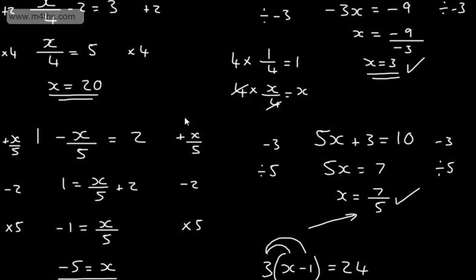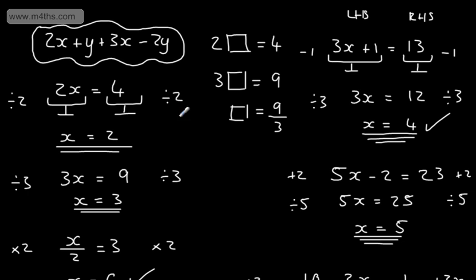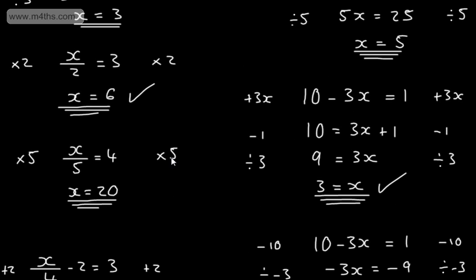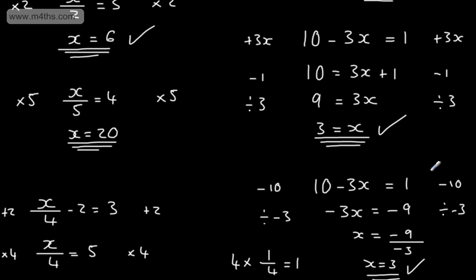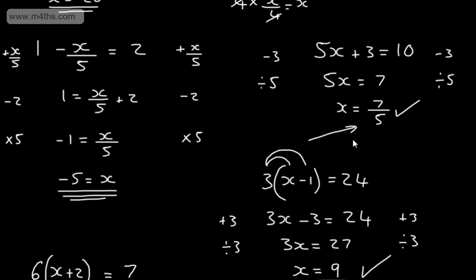So that's solving simple linear equations when we have an unknown on one side. Remember, an expression becomes an equation if there's an equal sign in it. I've used this idea of balancing — a set of scales — where what you do to one side, you must do to the other. For many this will seem like overkill, but it will build good skills for more challenging equations as we get to them.